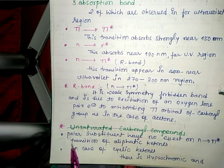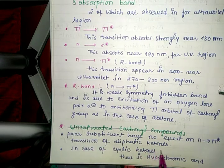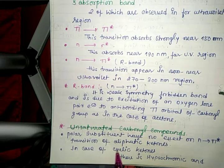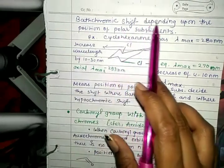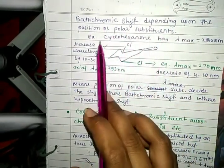Polar substituents have no effect on n to pi star transitions of aliphatic ketones. However, in cyclic ketones, there is hypsochromic shift and bathochromic shift depending upon the position of polar substituents.